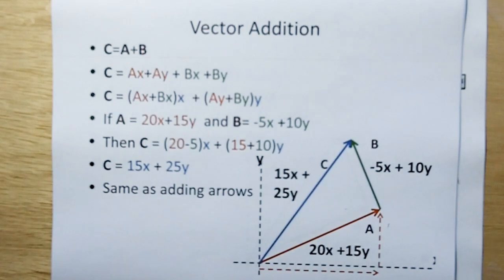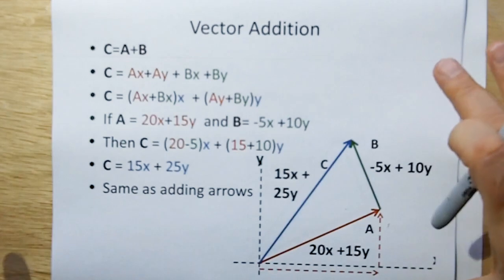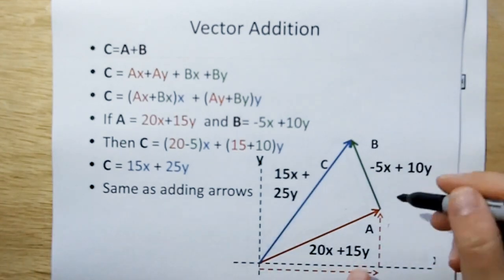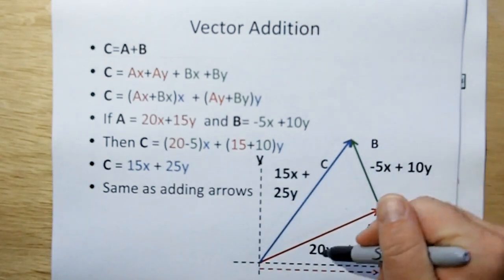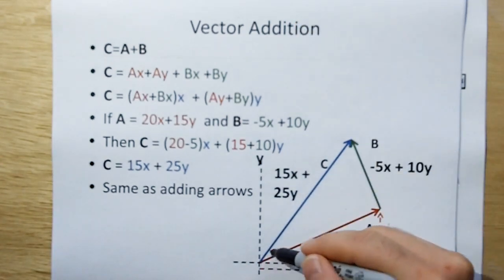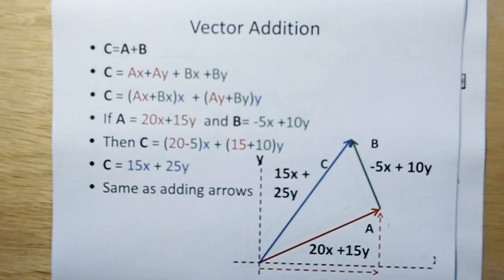And that's the same thing if you want to do it graphically. If you had vector A and you draw it out with a protractor on graph paper or whatever, and then at the tip of vector A, you then put down vector B, then where the B ends up is going to be the summation of the two vectors, which would be vector C.